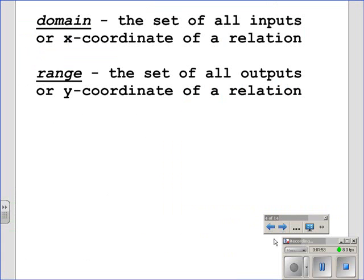The definition of a domain is the set of all inputs, or x-coordinates, of a relation. The definition of a range is the set of all outputs, or y-coordinates, of a relation.